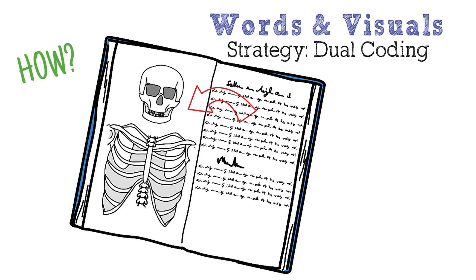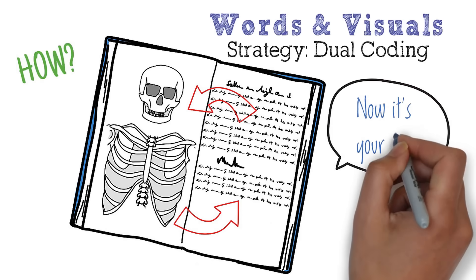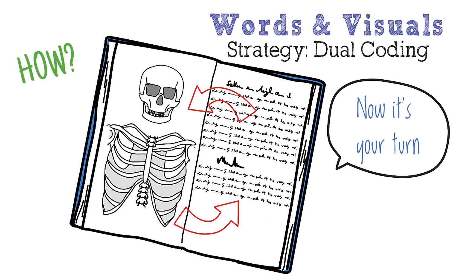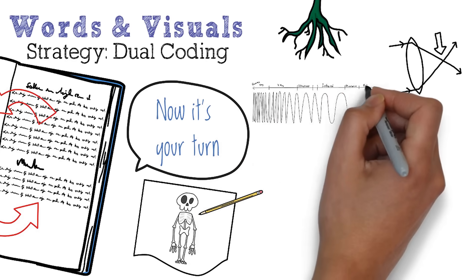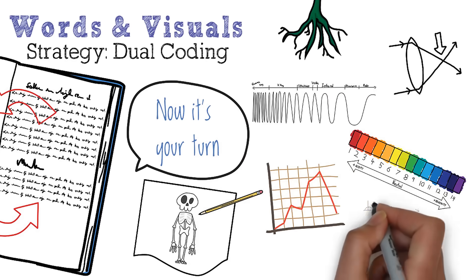Then do it the other way around. How does the image represent what's described by the text? Look at the visuals and explain in your own words what they mean. Then take the words from your class materials and draw your own picture for them. Try to create different ways to represent the information and start to use this strategy when you practice retrieving your knowledge later on.